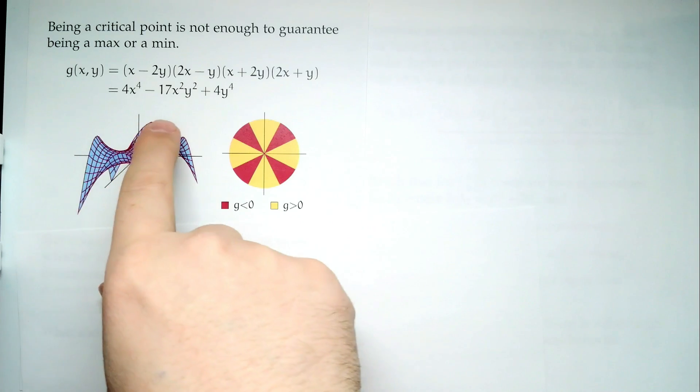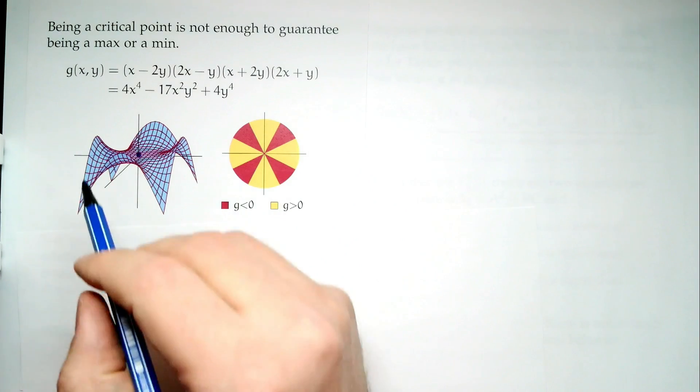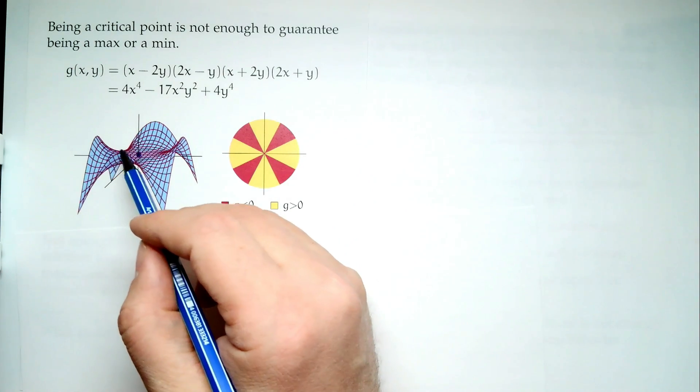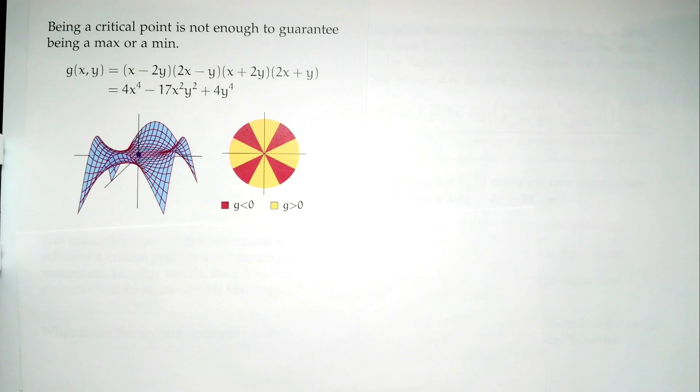In Calc 3, multivariable things get more interesting. Here's a function g(x,y) formed as a product that becomes 4x⁴ - 17x²y² + 4y⁴. On the left is a three-dimensional plot. Around (0,0) the surface looks like fabric — going up and then down, up then down. In some directions you're going up, in other directions you're going down.